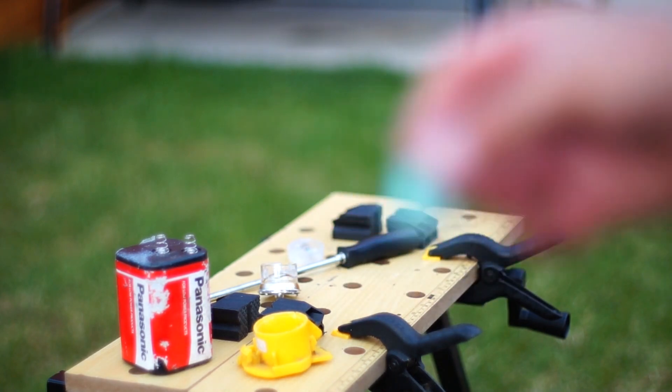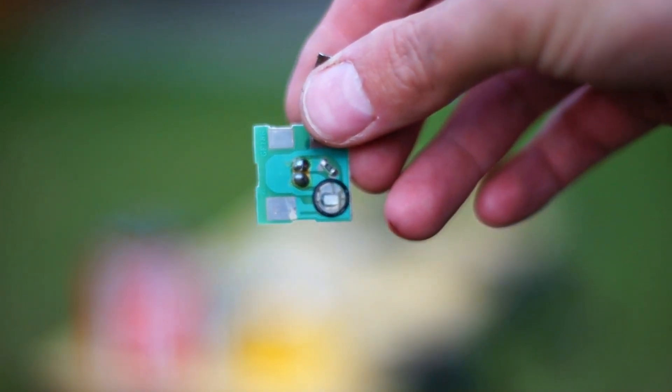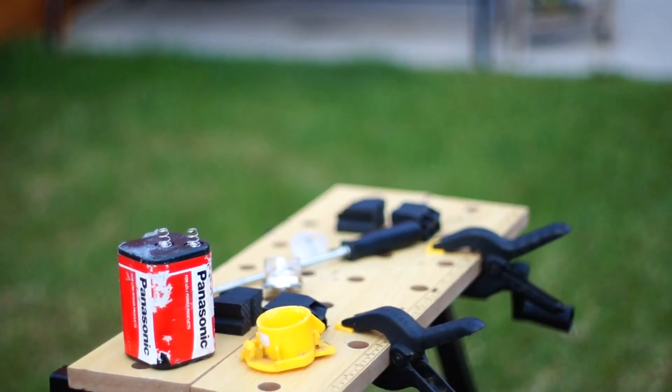But if we bring it up closer, yeah I'm surprised we can't see any kind of radio transmitter or whatnot. Let me go get my macro lens.